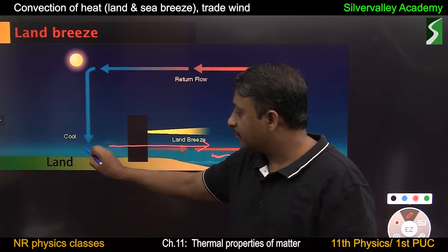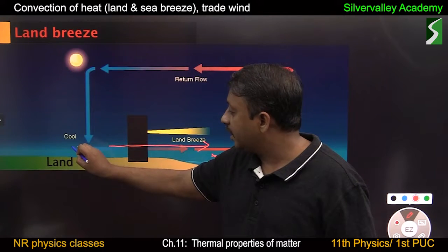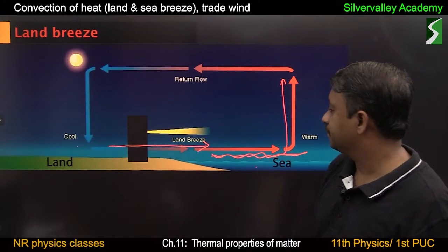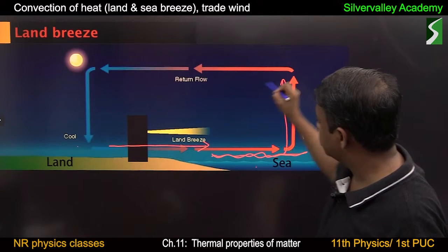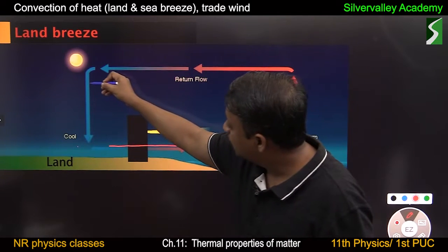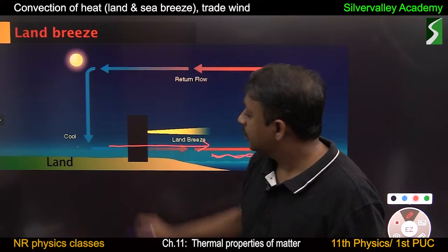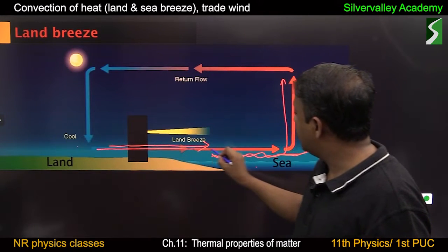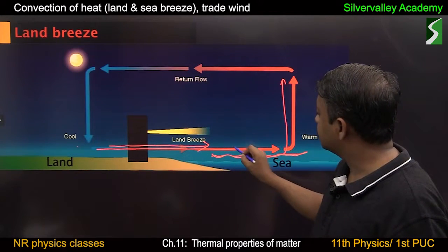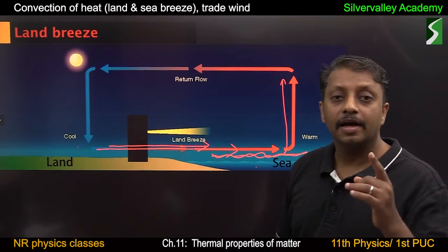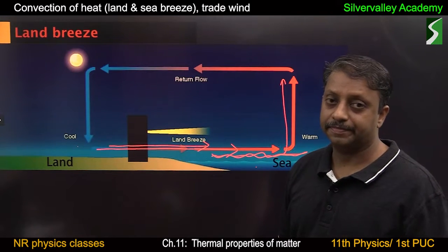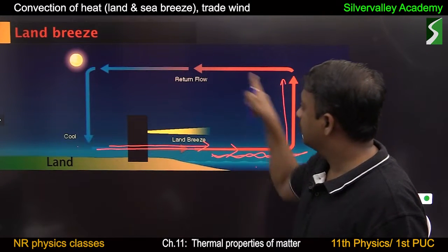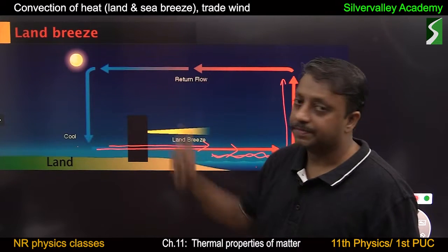Temperature of the land air will be less compared to temperature of the sea air. That is why the sea air rises and the cooler land air sinks. So there is a gentle breeze from land towards sea, and this is land breeze. Due to convection, we can explain land breeze.